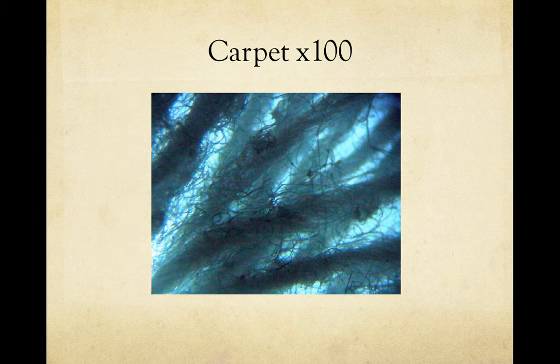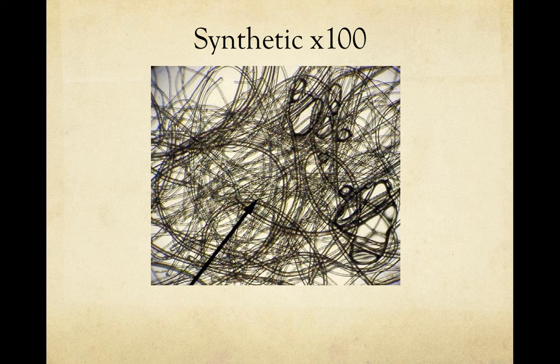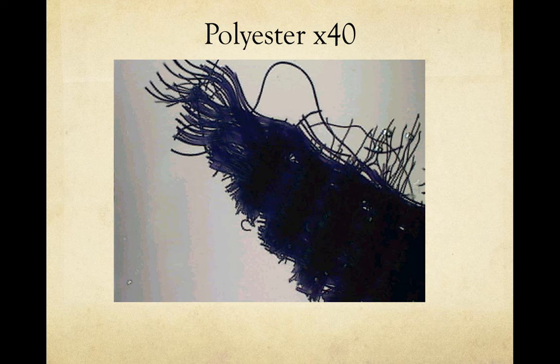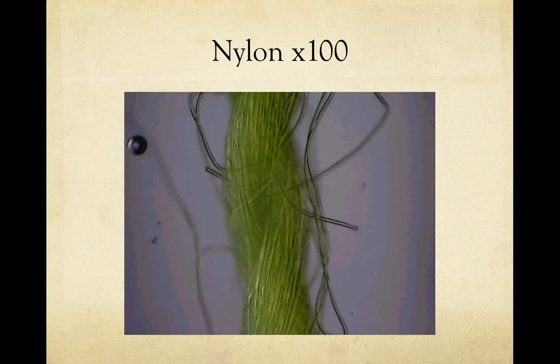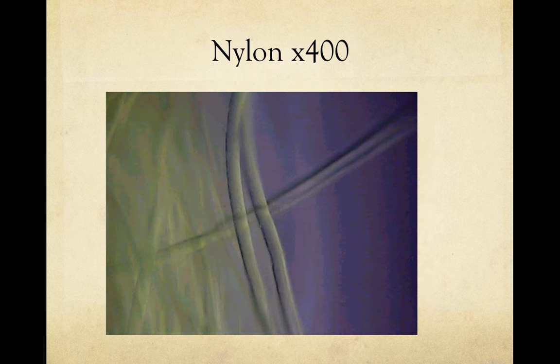Here are some examples of microscopic imagery of synthetic fibers to show basic shape differences. Here's carpet, which is generally a synthetic fiber, followed by another type of synthetic fiber, then polyester at higher magnification, and nylon with increasing magnification. Hopefully you're able to notice how circular and uniform these synthetic fibers are in comparison with the cotton and wool microscopic images from earlier. We'll talk about these differences in shape in the fiber analysis section of this topic.